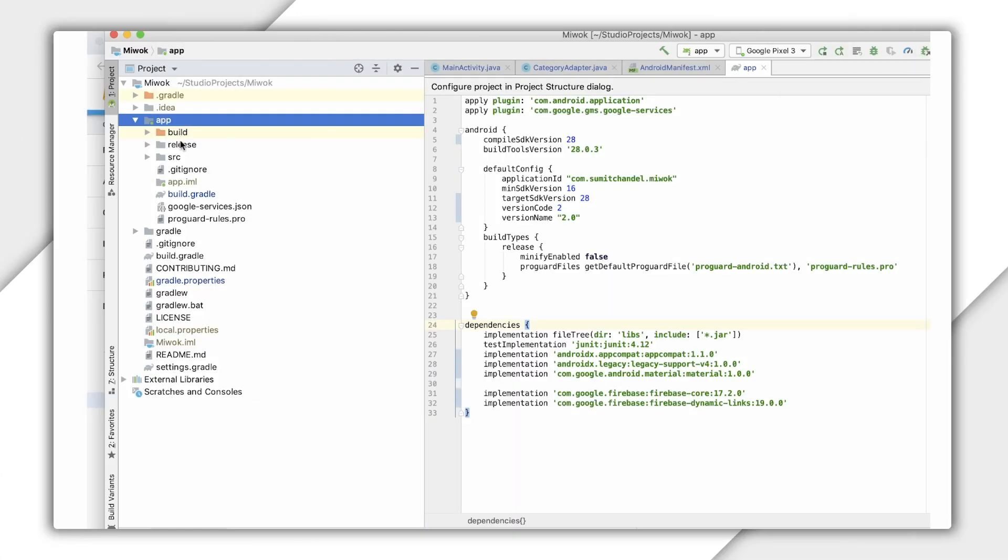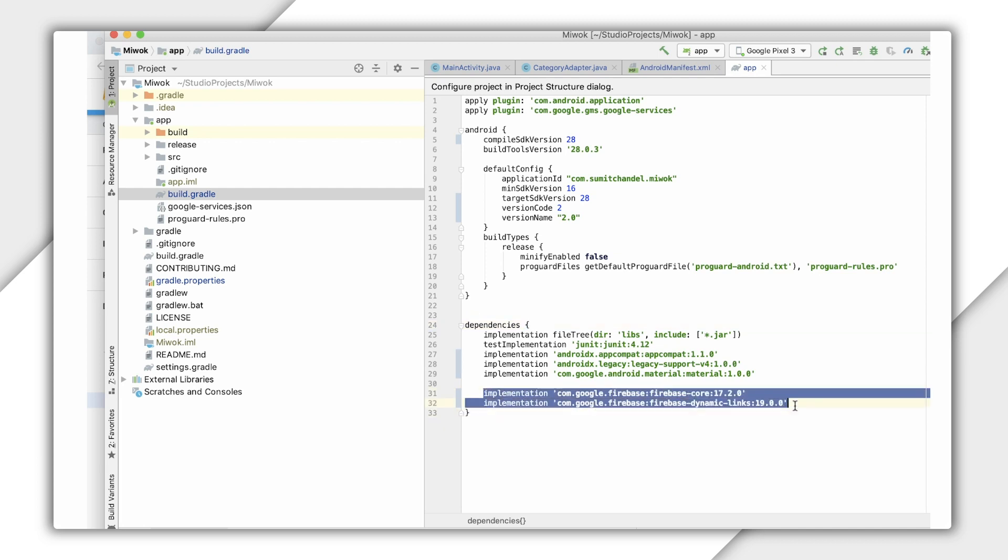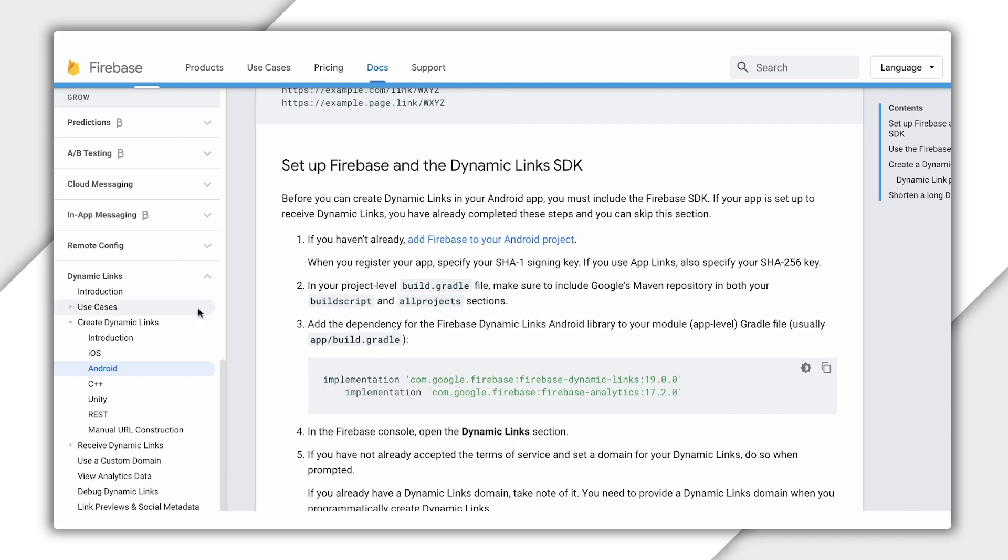First, let's make sure we've already added the Firebase Dynamic Links SDK to your Android app. This requires adding both the Firebase Core libraries and the Firebase Dynamic Links library to our app-level build.gradle file. At the time of this recording, this would be Firebase Core 16.0.5 and Firebase Dynamic Links 16.1.5. So I'll add those in here, but you'll want to be sure to check the documentation for the latest version at the time that you're watching this video.